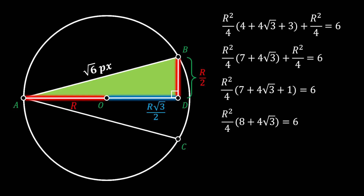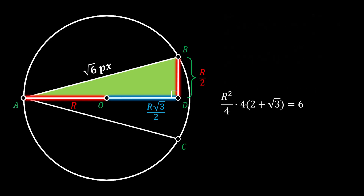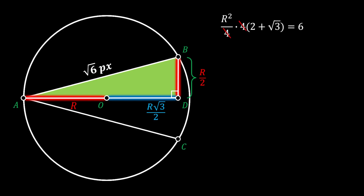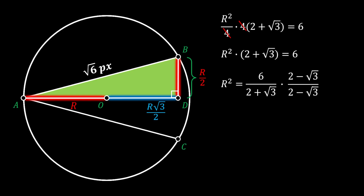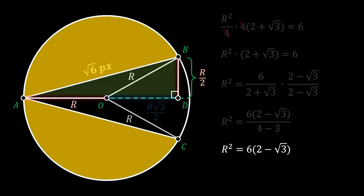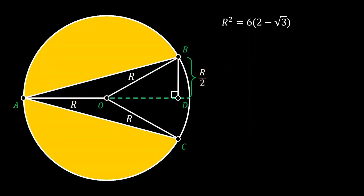Isolating 4 as a common factor from the brackets and canceling, we get r² times the quantity (2 + √3) equals 6. From here, r² equals 6 divided by (2 + √3). Rationalizing this expression, after final simplification we get r² equals 6 times (2 − √3). We'll leave this value as is for now.